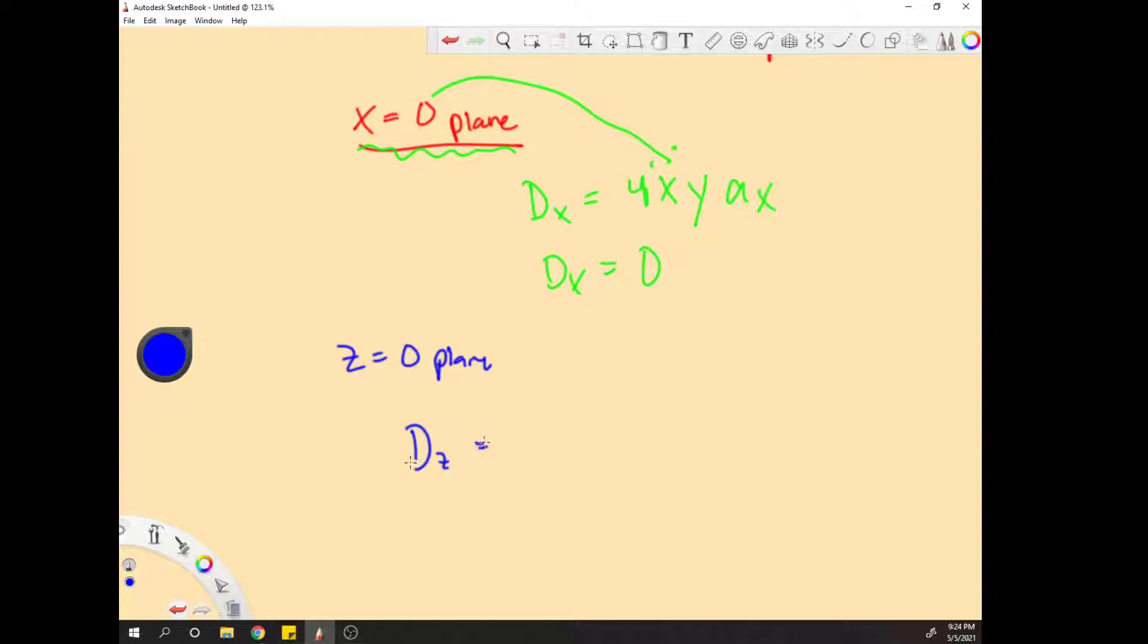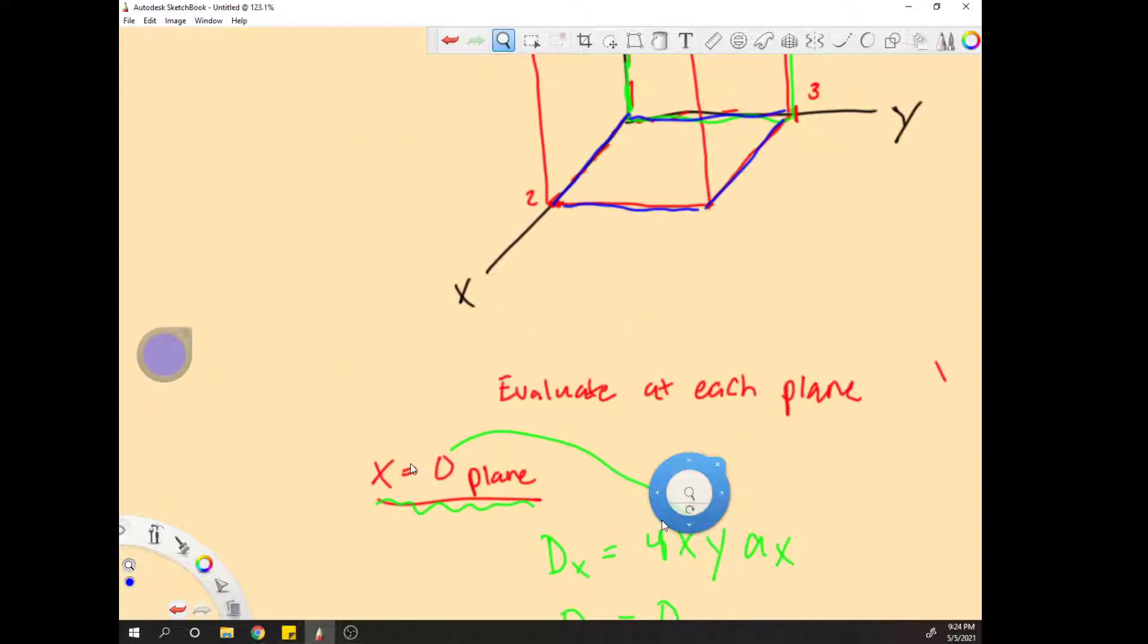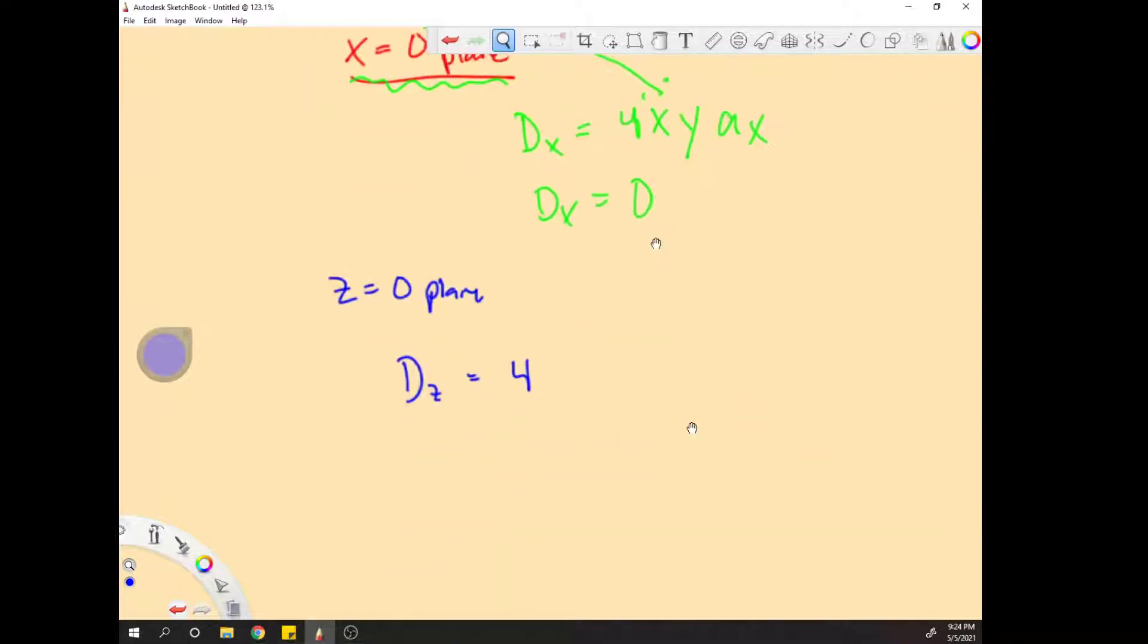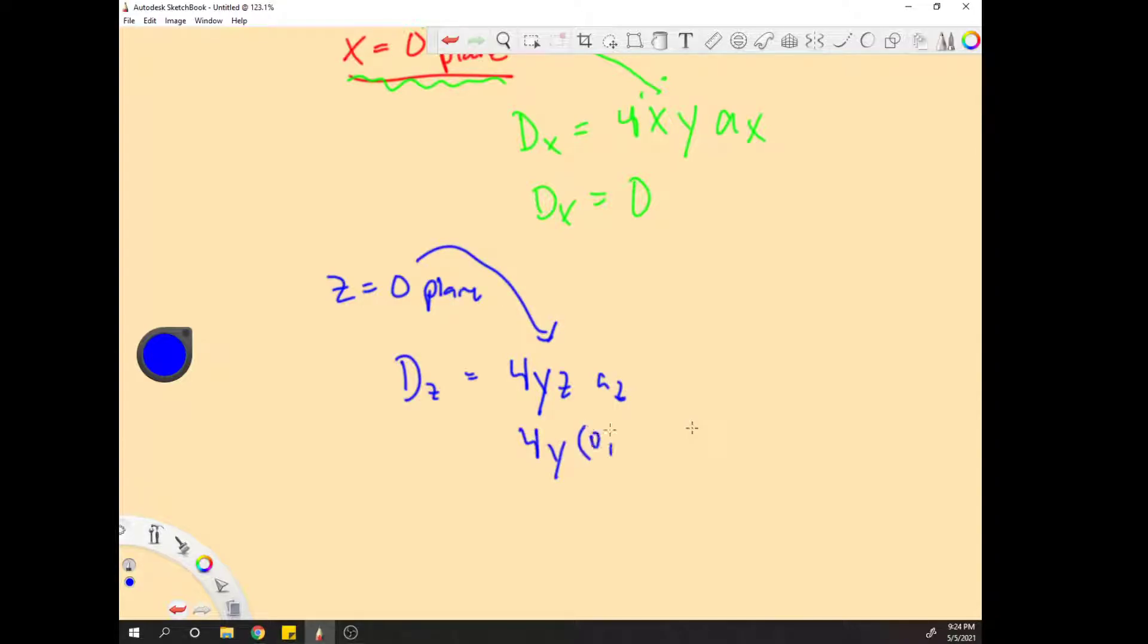So we're worried about this upward component, this upward direction. That would be this right here. D z equals zero, so that's two planes done. They're both equal to zero, they contribute nothing.